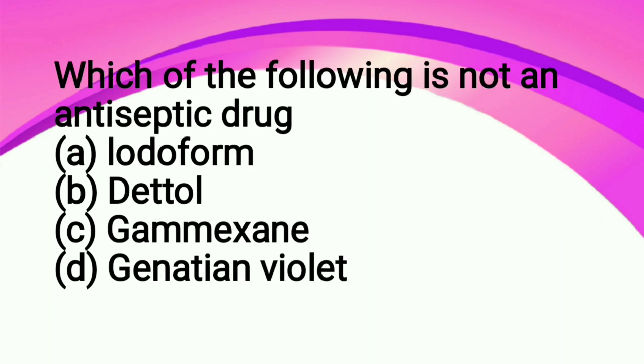Which of the following is not an antiseptic drug: option A iodoform, option B Dettol, option C gammexane, option D gentian violet. So the correct answer is gammexane. The other three are antiseptic drugs, and option C is an insecticide.